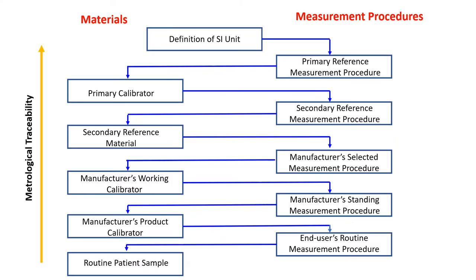This figure represents the metrological traceability chain detailed in ISO 17511. I am sure you have seen various versions of this figure and are familiar with the calibration traceability process, so I will not spend time reviewing the detailed specific steps involved. The essential components of the reference measurement system are the definition of the measurand, reference measurement procedures, and reference materials.